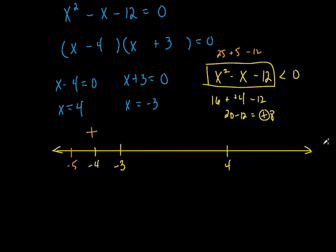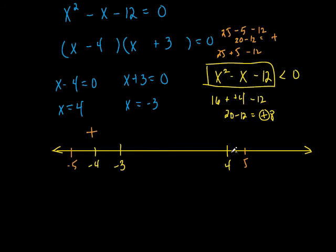Let's try a number bigger than 4. Let's plug in 5: positive 5 squared is 25, minus 5, minus 12. That's 25 minus 5 is 20, minus 12 is a positive 8. So any number to the right of 4 also gives me a positive number.